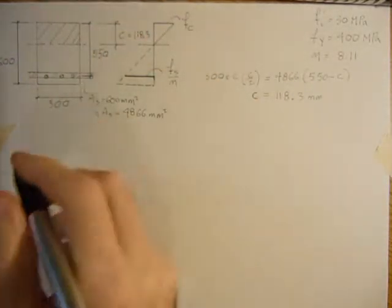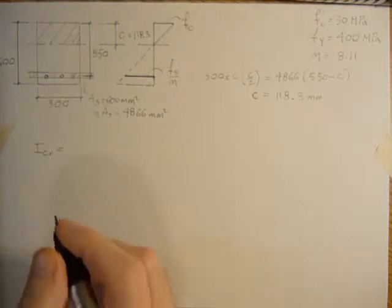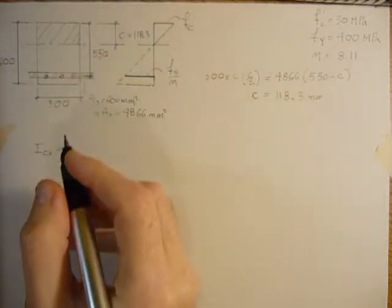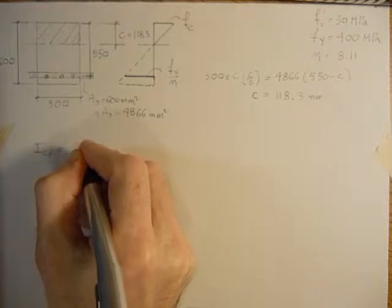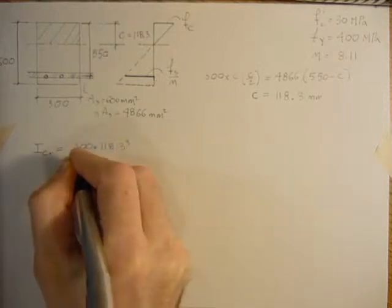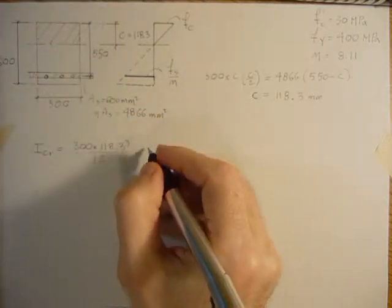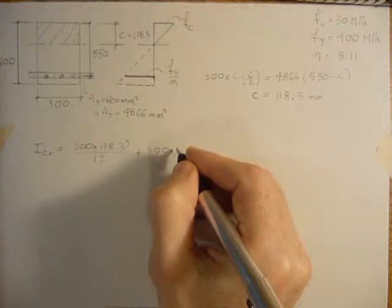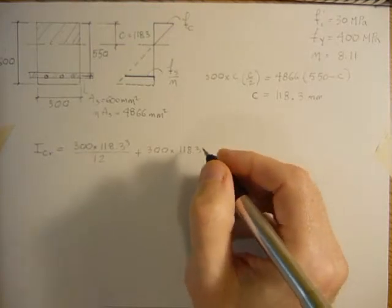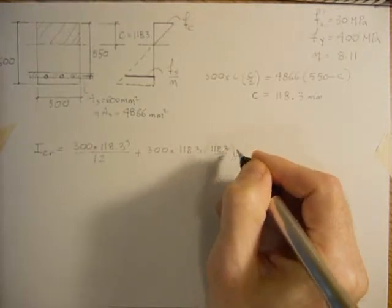And now we can work out the inertia. It's cracked moment of inertia. So I cracked equals the rectangular moment of inertia, 1/12 BC cubed, which is 300 times 118.3 cubed over 12, plus its AD squared component: 300 times 118.3 times D squared, or the centroid of D squared, which is 118.3 over 2 squared.